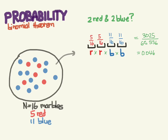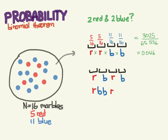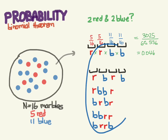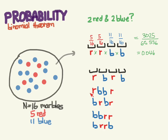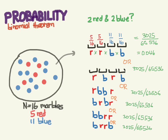But it's not that easy, because there's another way to get two reds and two blues. You could get red, blue, red, blue; or red, two blues, then a red. There are actually six ways to do it. Using the multiplication rule, each arrangement gives 5/16 × 11/16 × 5/16 × 11/16. Because of the OR, the addition rule says we add all those up, giving us 18,150 over 65,536 as the probability of getting two reds and two blues.